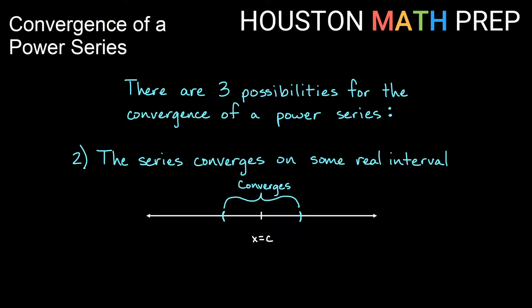Our second possibility is that it converges on some real interval — not just a point, but some interval around a point. That might be an open interval or a closed interval, but some interval around its center. The center must be in that interval; it will be at the center of that interval, in fact, that's why we call it the center.